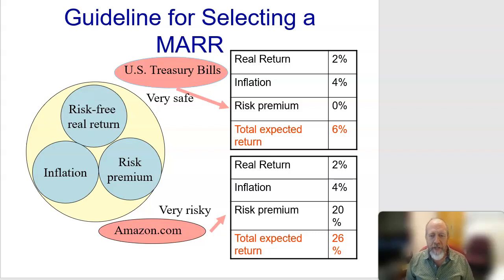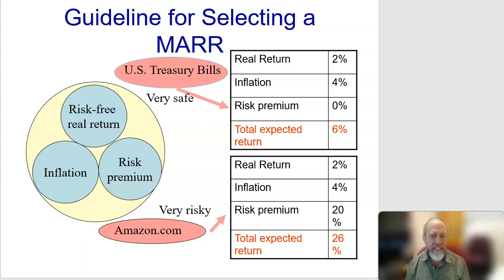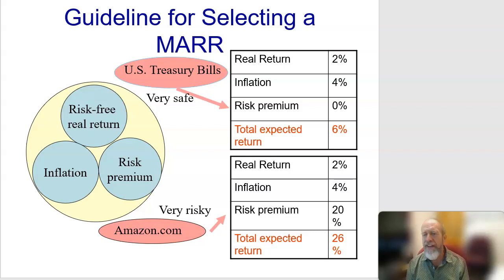Putting in that risk is true of projects: you have return, inflation, and a risk premium. Put all of those together and say this is the number I need to exceed to make this investment or project worthwhile. The MARR is going to typically be higher than the five to eight percent we usually talk about with interest rates.